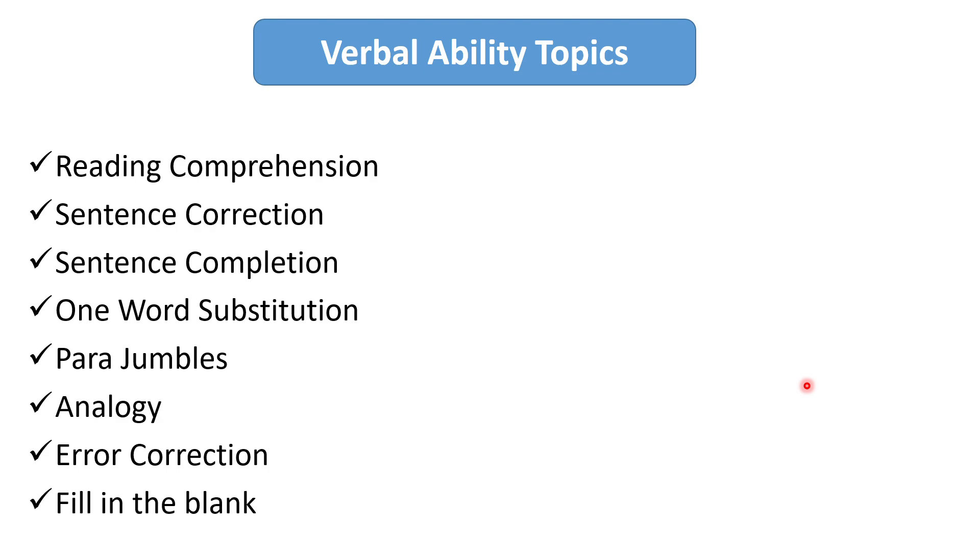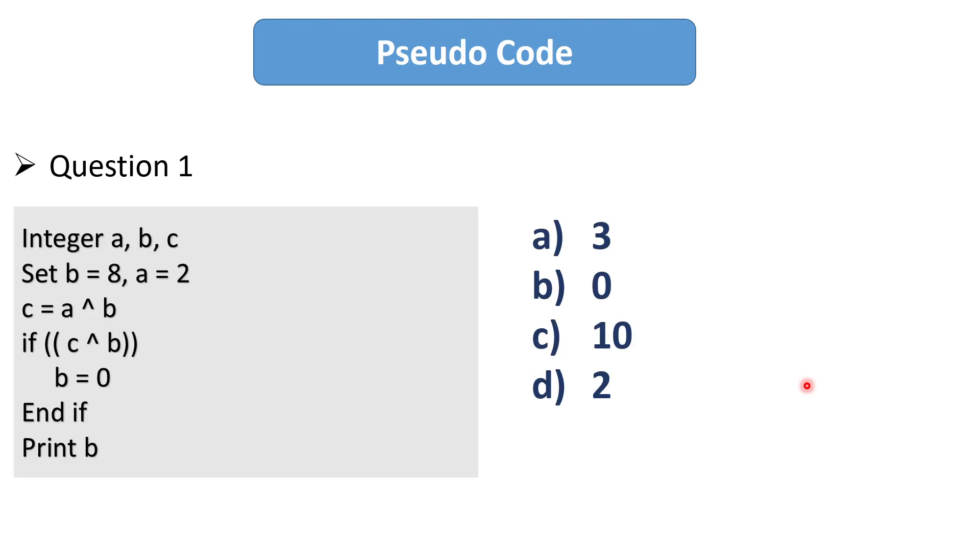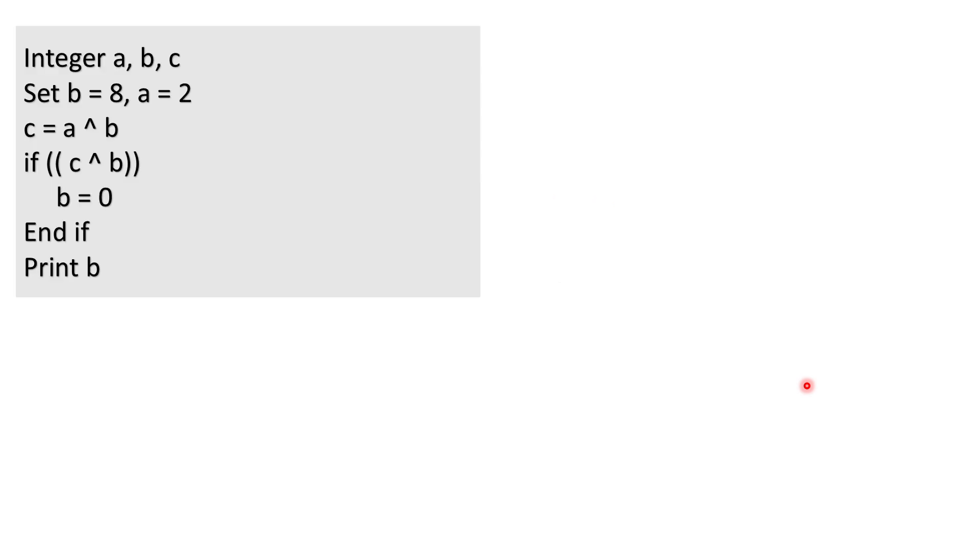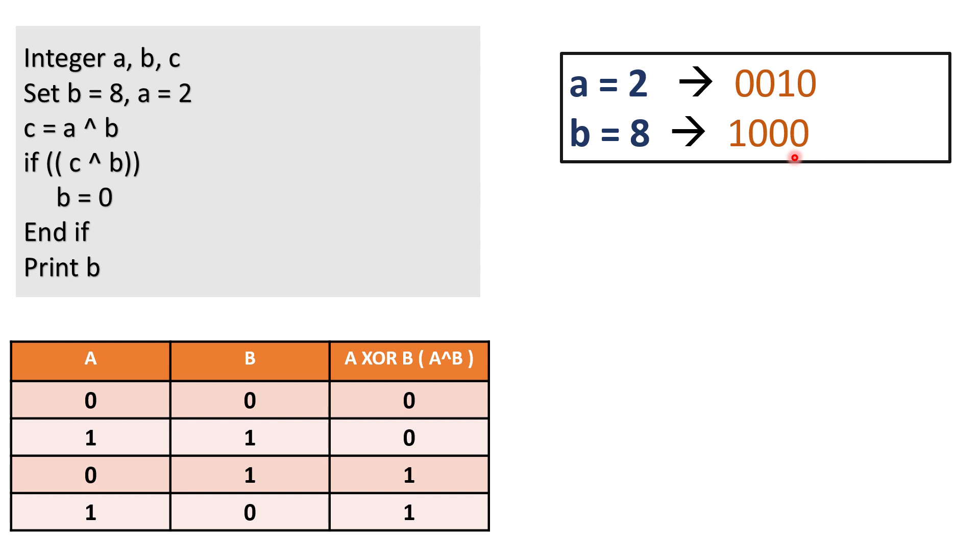Now the fourth section is pseudocode test. Here we will see some examples of pseudocode and we will also solve them. The first question is this and its answer is B that is 0. Now let's see how we will solve this question. So here we have three variables a, b and c where the initial value of a is 2 and b is 8. And in the third line we have to perform the XOR operation between a and b. So that's why we need to convert the decimal number into the binary number. The binary number for 2 will be 0010 and for b it will be 1000. Now let's see how we can perform the XOR operation. This is the table for XOR operation. If both the input values will be same then the output will be 0 otherwise it will be 1.